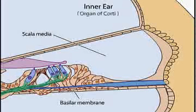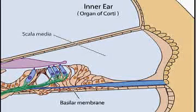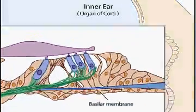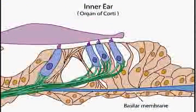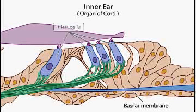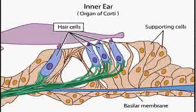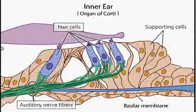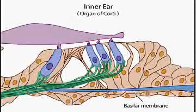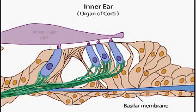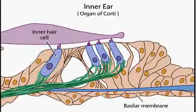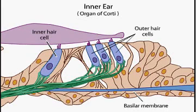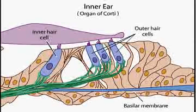Within the scala media, atop the basilar membrane, is the organ of Corti, the collective term for all the elements involved in the transduction of sound. The organ of Corti includes three main structures: the sensory cells called hair cells, an elaborate framework of supporting cells, and the terminations of the auditory nerve fibers. Each human ear contains one row of about 3,500 inner hair cells and three rows of outer hair cells, totaling about 12,000 cells.